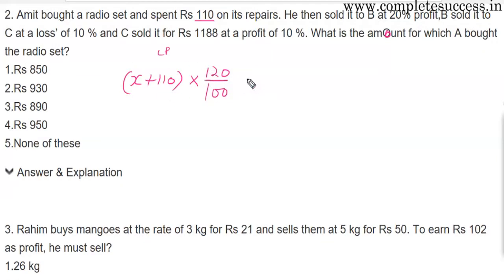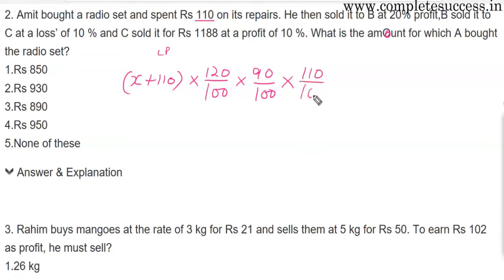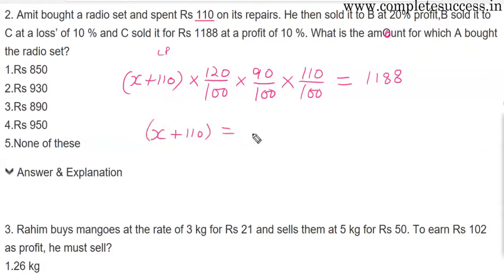After 20% increase, A sells to B. B then sells to C at a 10% loss, so we apply 90%. C sold it for Rs.1188 at a profit of 10%, meaning we apply 110 over 100. So the equation becomes: x plus 110 equals 1188 multiplied by 100 over 110, over 90, over 120.